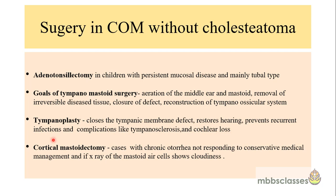In few cases, especially the tympanomastoid type with involvement of mastoid ear cells and chronic ear discharge not responding to conservative management, we have to do cortical mastoidectomy. In patients with adenotonsillar hypertrophy, adenoiditis or recurrent tonsillitis — a source of ascending infection to the ear — adenotonsillectomy is indicated, mainly in children with persistent mucosal disease of the tubal variety.